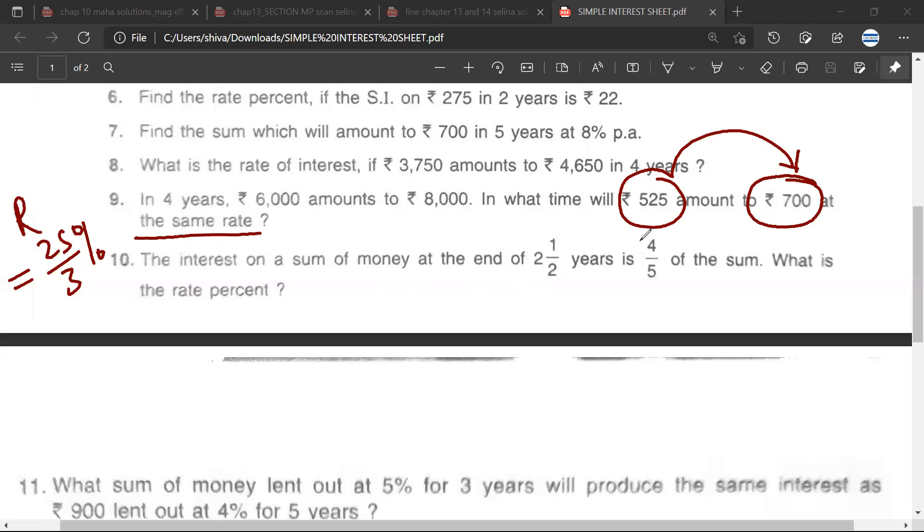We'll find the SI. 700 minus 525, so it will be 175. Amount minus principle, 700 minus 525. Is it correct? Yes. This would be 175 rupees.